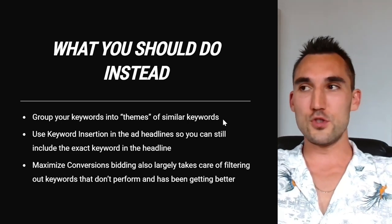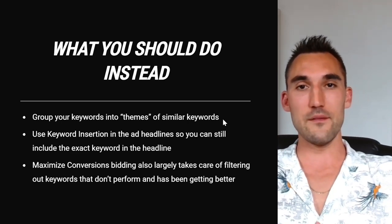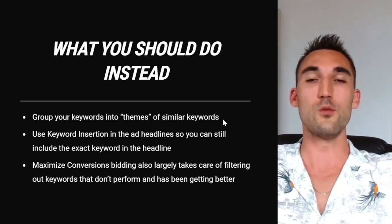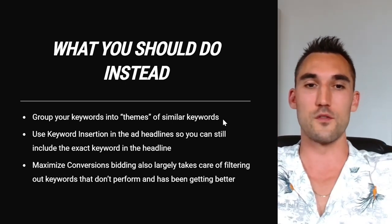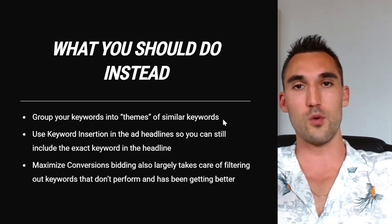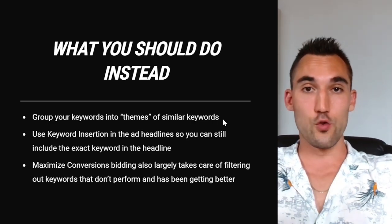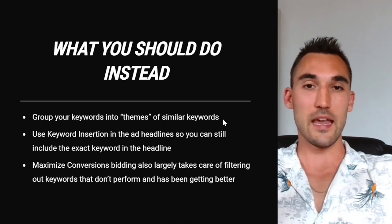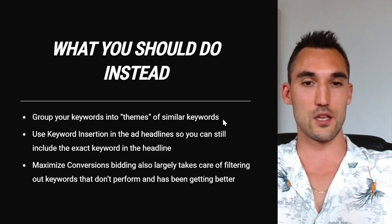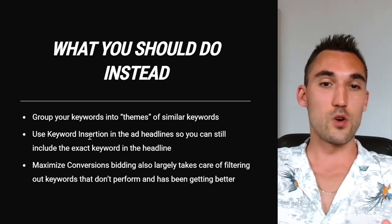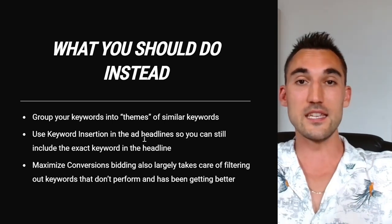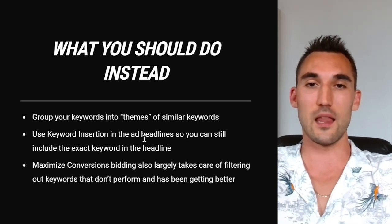What I recommend — and I've shown this in my Google Ads campaign videos — is to group your keywords into themes or topics of similar keywords. With the car wash example, all of those keywords would go into one ad group called 'car wash.' You can still get the keyword into the headline using keyword insertion, which inserts the exact phrase the person searched directly into the ad headline.